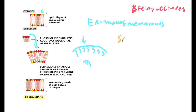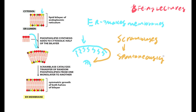Scramblases randomly transfer phospholipids from one monolayer to the other. They do this spontaneously without needing energy, which allows symmetric growth of both halves of the bilayer — an equal amount of phospholipids on each side. You just need to know that scramblase allows us to make the membrane symmetrical.